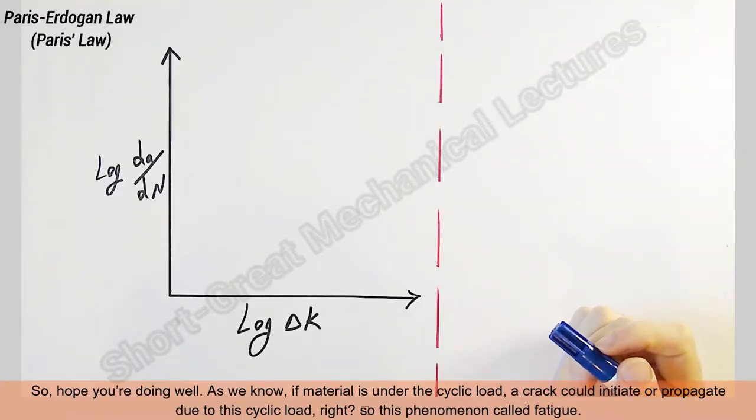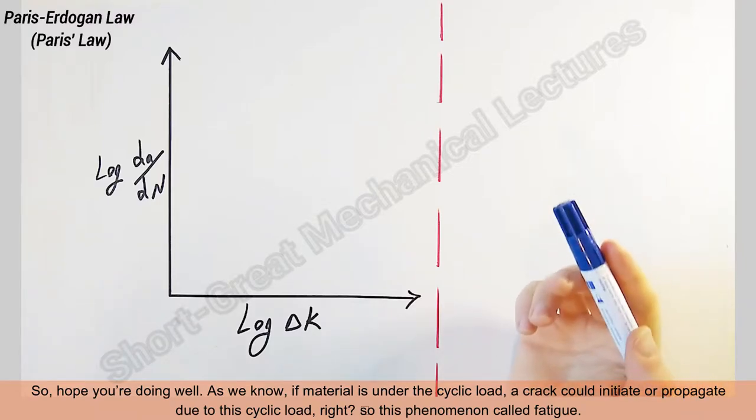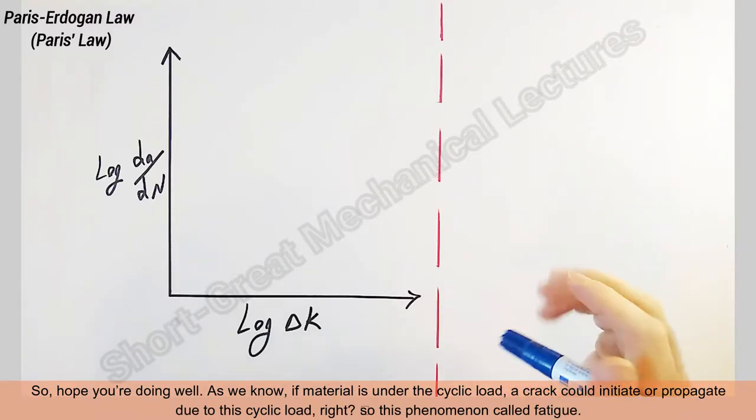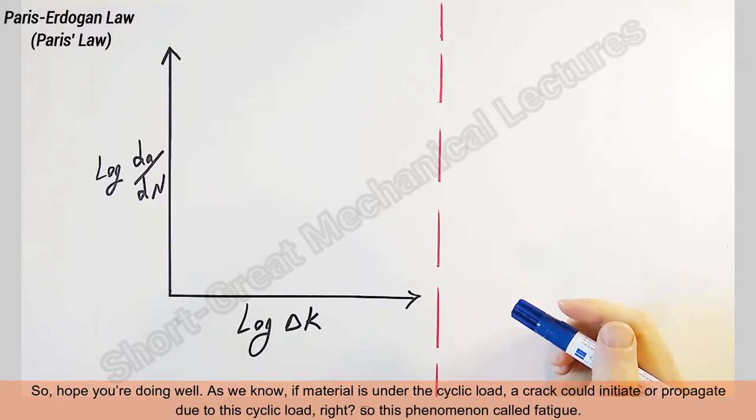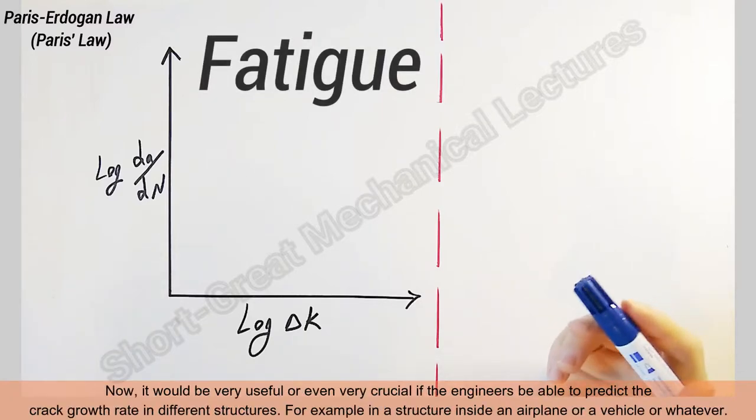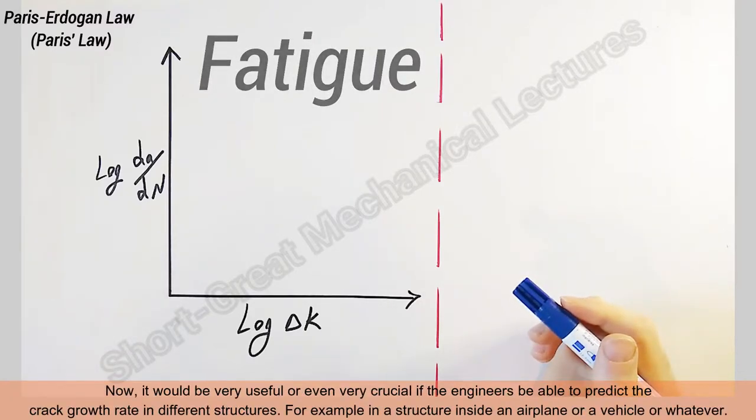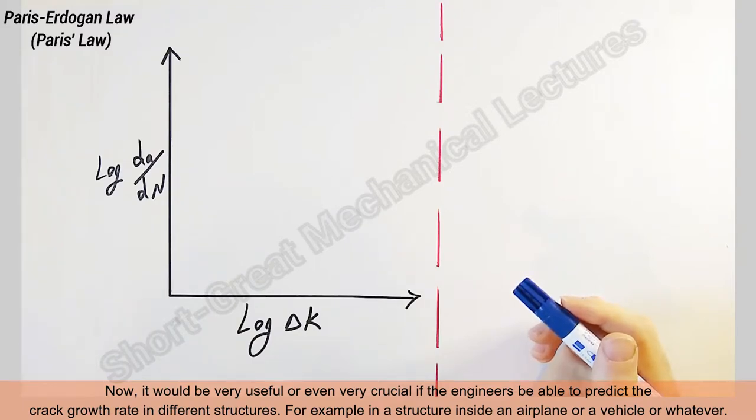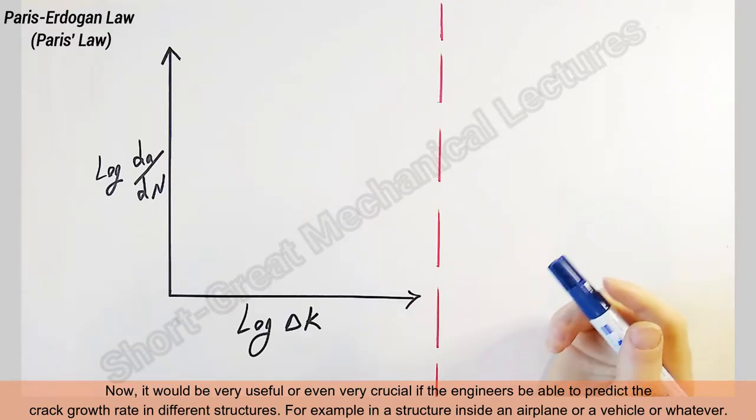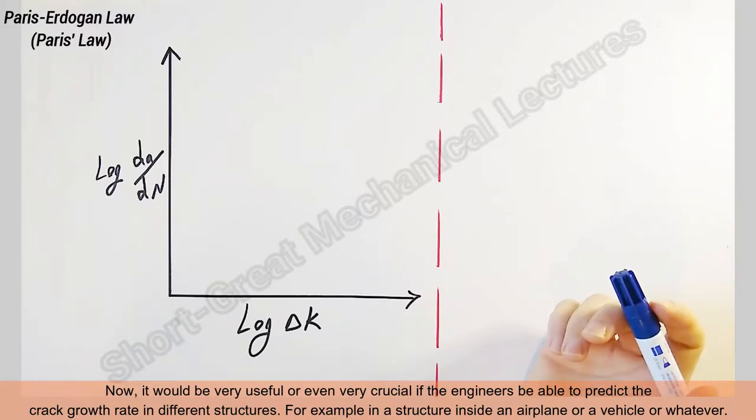So hope you're doing well. As we know, if material is under cyclic load, a crack could initiate or propagate due to this cyclic load. This phenomenon is called fatigue. Now it would be very useful or even very crucial if engineers are able to predict the crack growth rate in different structures, for example in a structure inside an airplane or a vehicle.